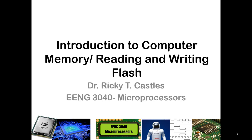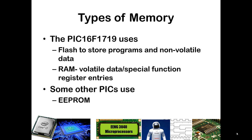In this video I will discuss the computer memory on board the PIC16F1719 microcontroller and how to read from and write to the flash program memory. The PIC16F1719 uses a couple different types of memory. One is flash, where your code actually gets stored, and the other is RAM, which is volatile. That is where your special function registers live and where you can declare variables stored in unassigned RAM locations. Other PICs use EEPROM — electrically erasable programmable read-only memory — but our particular PIC does not. Some PICs have a third type of memory which is a little bit slower but also non-volatile.